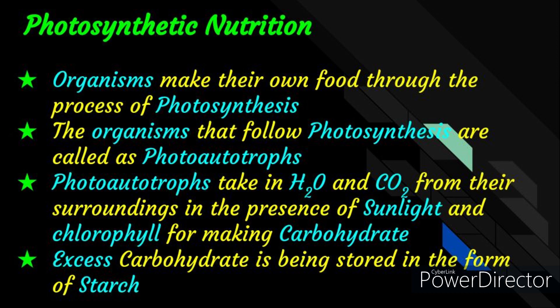Now let us learn about photosynthetic nutrition. This mode of nutrition occurs in green plants. Organisms make their own food through the process of photosynthesis. The organisms that follow photosynthetic nutrition are called photo-autotrophs. Photo-autotrophs take in H2O and CO2, that is water and carbon dioxide, in the presence of sunlight and chlorophyll to produce carbohydrates. Carbohydrates are utilized for providing energy to the plants, and excess carbohydrates are stored in the form of starch.